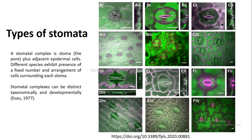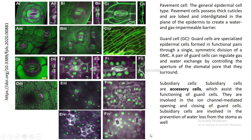Let us also know the terminology we will be using. A pavement cell is a general epidermal cell type that possesses a thick cuticle and is lobed and interdigitated in the plane of the epidermis to create a water and gas impermeable barrier. Here you can see pavement cells with thick cuticles that interdigitate and create this impermeable barrier.